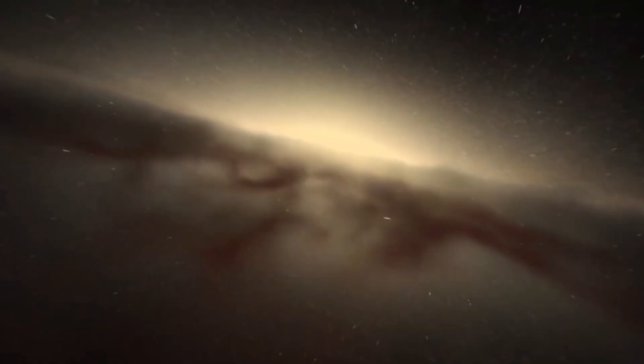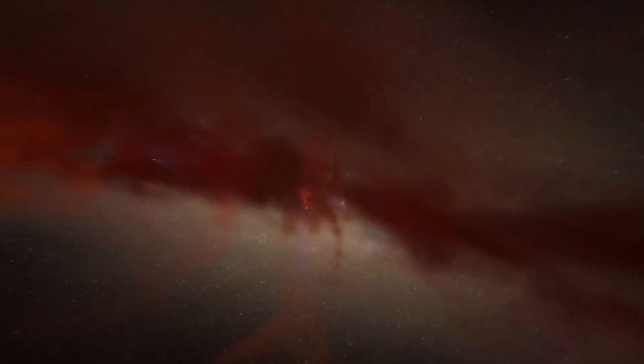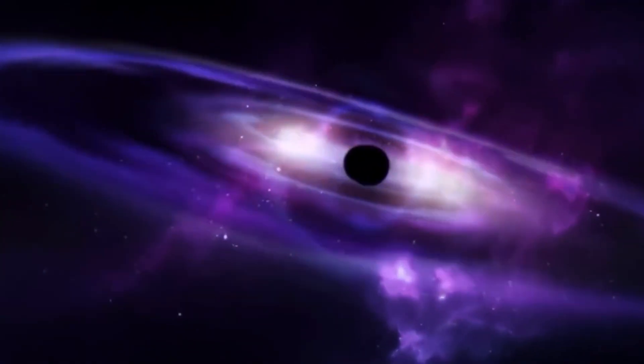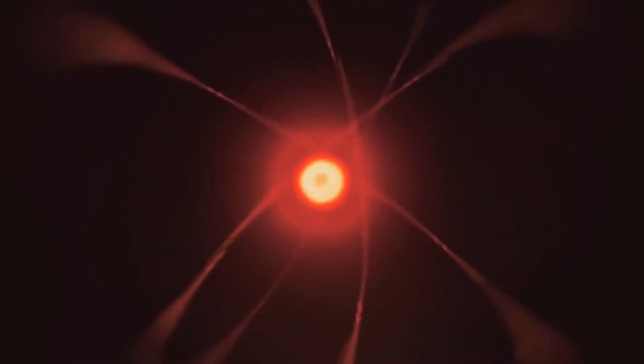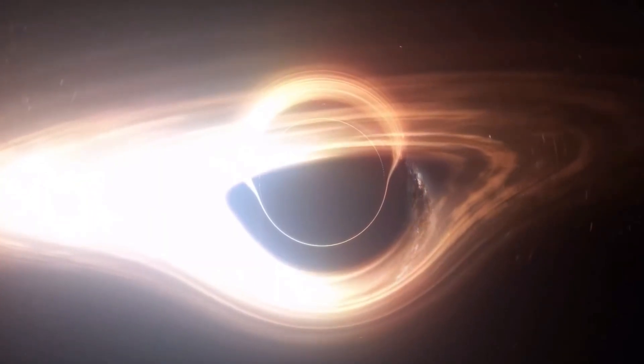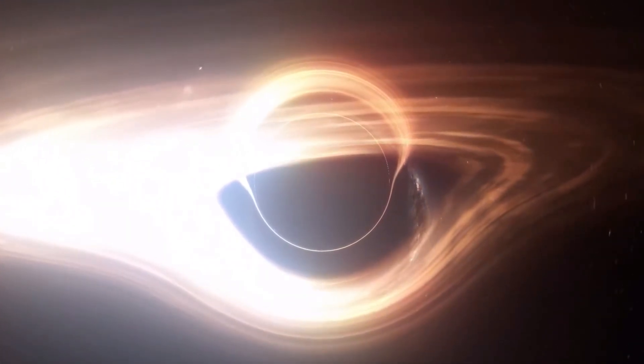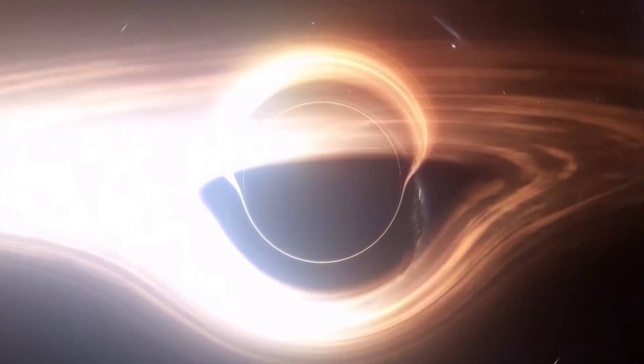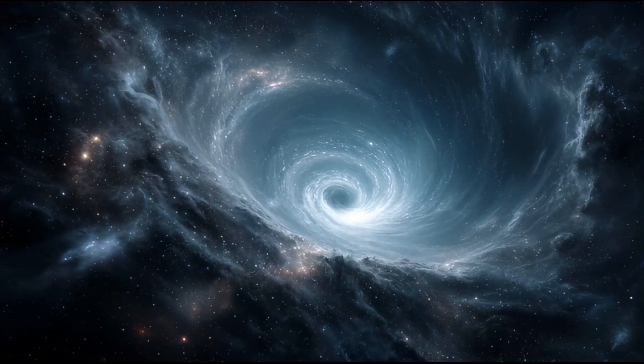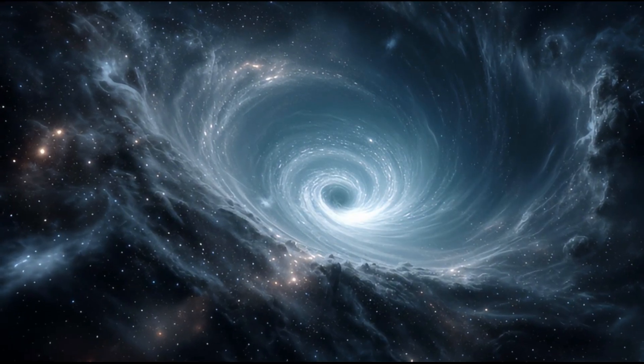About three solar masses worth of energy radiated away as gravitational waves in less than a second. That's more power than all the stars in the observable universe combined, but released entirely as ripples in spacetime itself. The merged black hole literally rang like a bell, with spacetime oscillating at specific frequencies determined by the black hole's mass and spin. What physicists call quasi-normal modes.